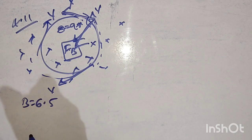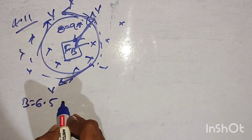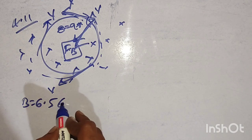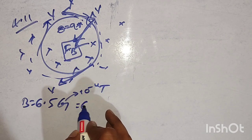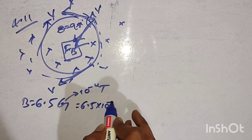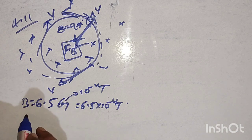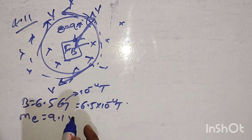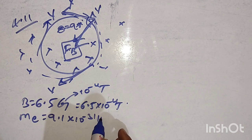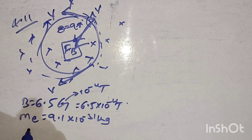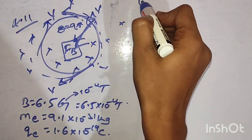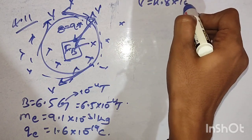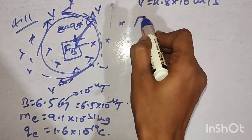B equals 6.5 G value, that is 6.5 x 10 to the power of minus 4 Tesla. Mass of the electron value is 9.1 x 10 to the power of minus 31 kg. Charge of 1 electron is 1.6 x 10 to the power of minus 19 Coulomb. Velocity is also given — that is 4.8 x 10 to the power of 6 meter per second.